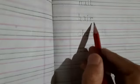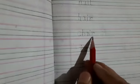Let's repeat all the words: P-A-I-R — pair. N-A-I-L — nail. H-A-I-R — hair. C-H-A-I-R — chair. T-A-I-L — tail. R-A-I-N — rain. S-A-I-L — sail. S-T-A-I-N — stain. J-A-I-L — jail. M-A-I-L — mail.